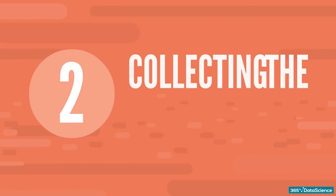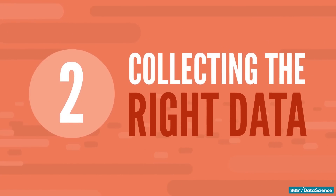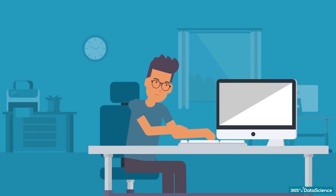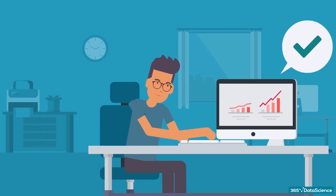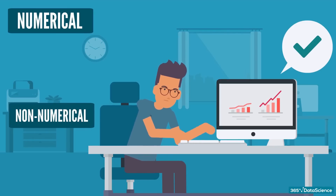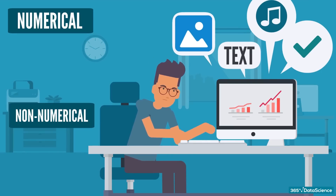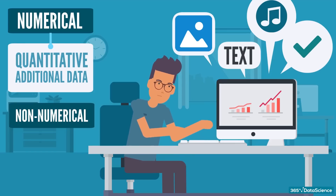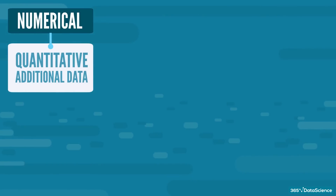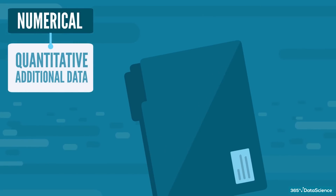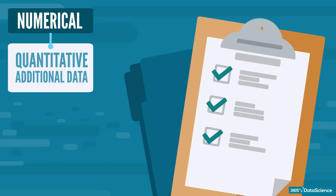Moving on to number two: collecting the right data. A senior data scientist must ensure the team under their lead collects and organizes relevant and useful data. It's crucial to know if the necessary data is already stored in the organization and in what formats — numerical or non-numerical, such as images, text, or sound. That will help you establish the company's methodologies for collecting additional data: quantitative for numerical data or qualitative for non-numerical data. Quantitative data is collected automatically from operations or via surveys and questionnaires. It's easy to analyze and represent visually.